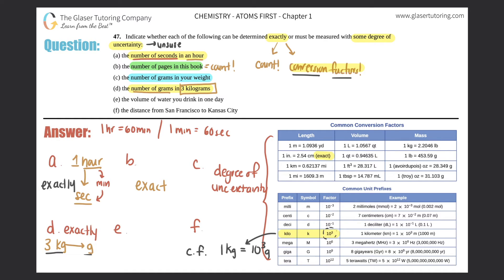Letter e, the volume of water you drink in one day. Can I count that, use a conversion factor, or is it a degree of uncertainty? I don't even know how much water I drank today, but I should be drinking more, especially because I'm talking a lot. I can't count that, I don't have a conversion factor for that, so it would have to be with some degree of uncertainty.